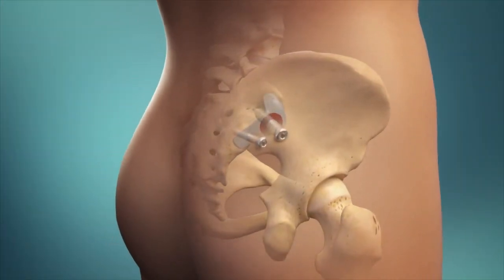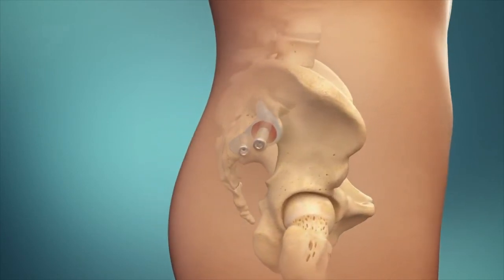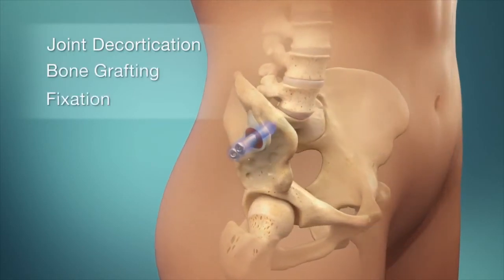The Symmetry sacroiliac joint fusion system is built on proven orthopedic fusion principles: joint decortication, bone grafting, and fixation with threaded implants.